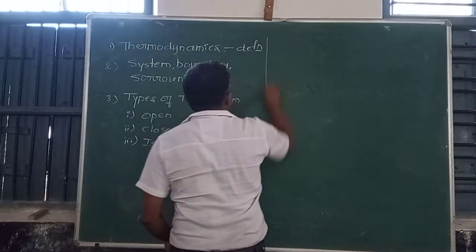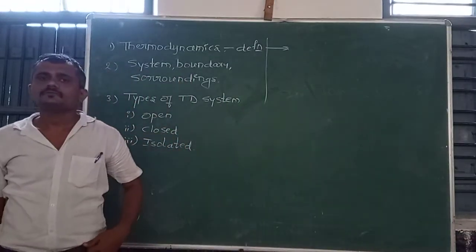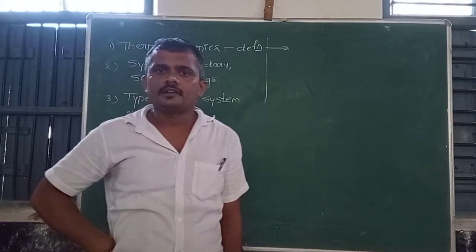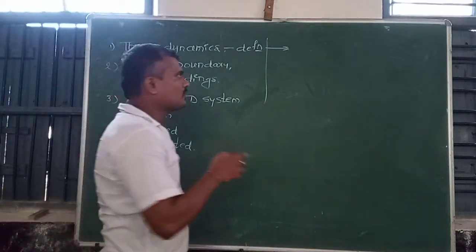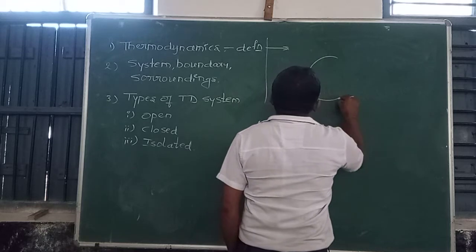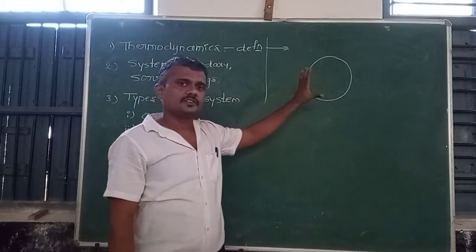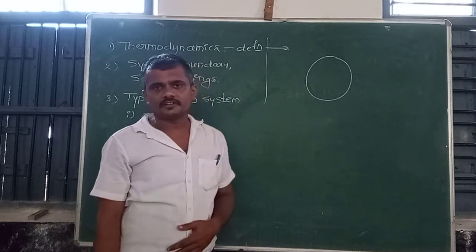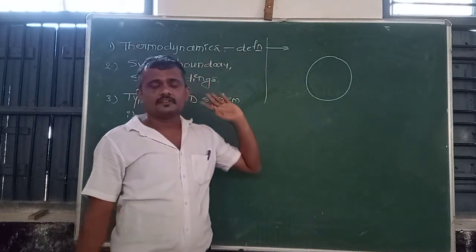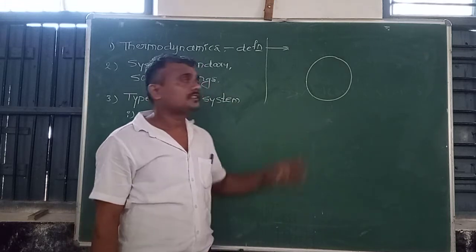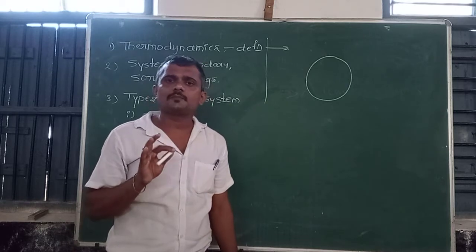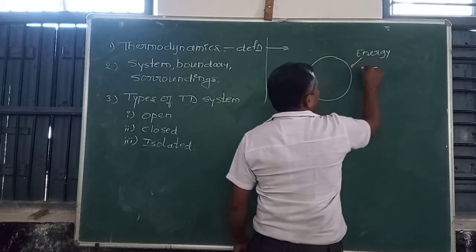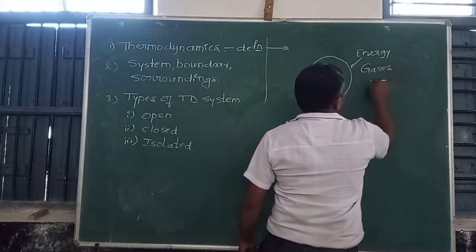Let me start with the definition of thermodynamics. Before we go into thermodynamics, let us consider a system — it is called a system where some gases and vapors are present in it. The definition of thermodynamics is: energy possessed by the gases and vapors.